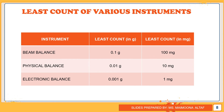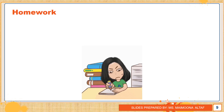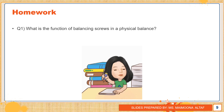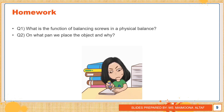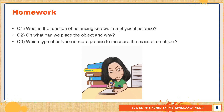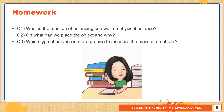That's all for today. I want to share some homework — you will complete it in your physics file. Question number one: what is the function of balancing screws in a physical balance? Question number two: on which pan do we place the object and why? Question number three: which type of balance is more precise to measure the mass of an object?